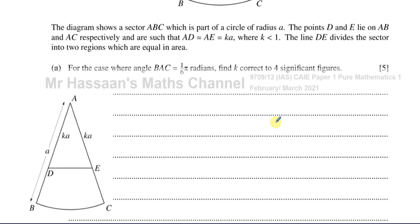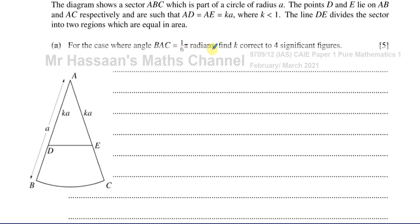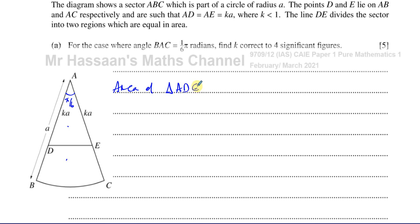For the case where angle BAC is π/6 radians, we need to find K correct to 4 significant figures. Since the area of triangle ADE equals the area of shape BDEC, we can write: area of triangle ADE equals area of shape BDEC.